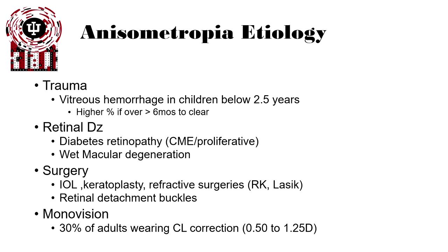Other causes of anisometropia include trauma, which includes surgery, vitreous hemorrhages in children under 2½, and retinal diseases such as diabetic retinopathy and wet macular degeneration. Surgeries such as corneal transplantation, keratoplasty, refractive surgeries, and retinal detachment buckle surgery can also cause it. And finally, some people are just born with natural monovision, with one eye set for distance and one eye set for near.